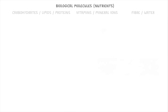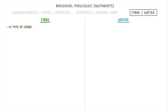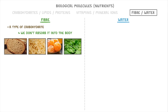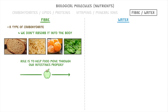The last things we need to look at are fiber and water. Fiber is actually a type of carbohydrate, but we normally think of it separately because we don't absorb it into the body at all. It's found in wholemeal foods like wholemeal bread and brown rice, as well as in fruits and vegetables, and its role is to help food move through our intestines properly — basically stopping us from getting either diarrhea or constipation.